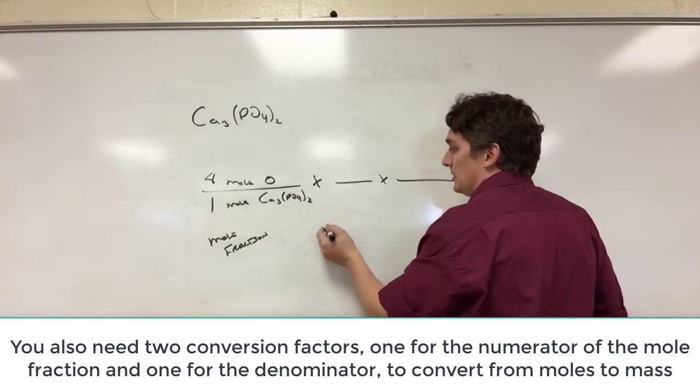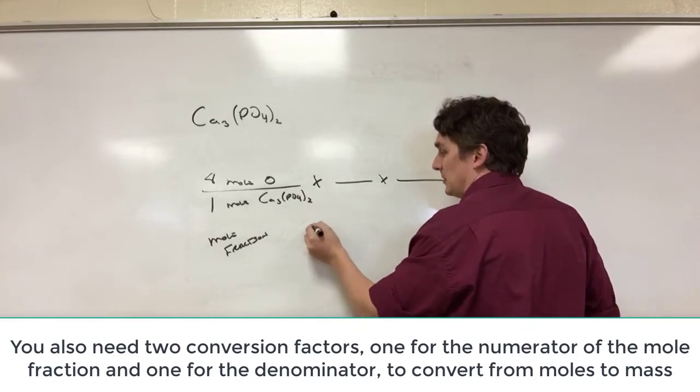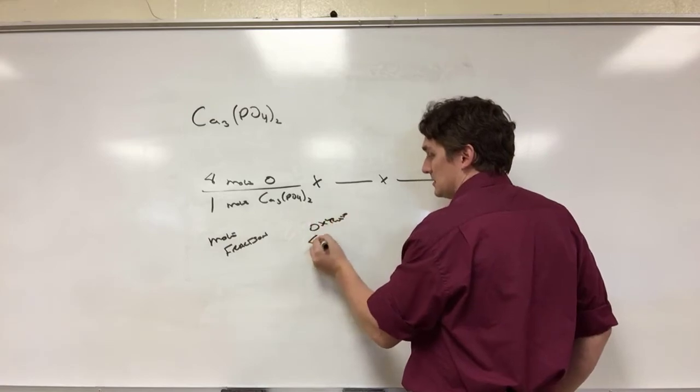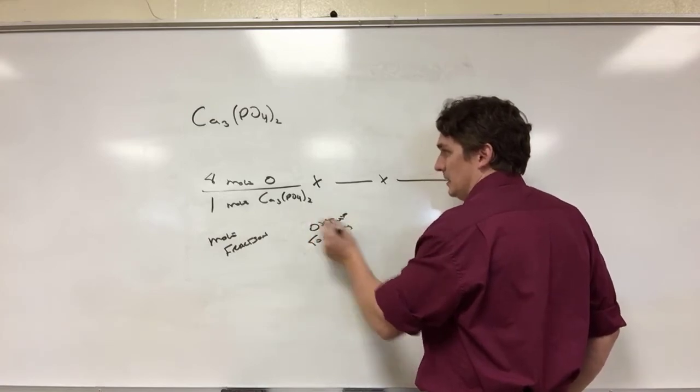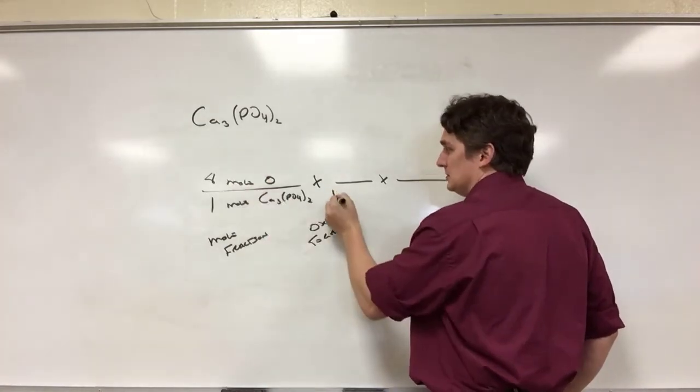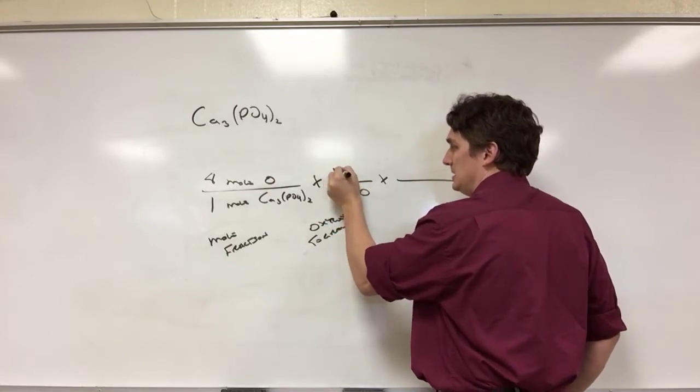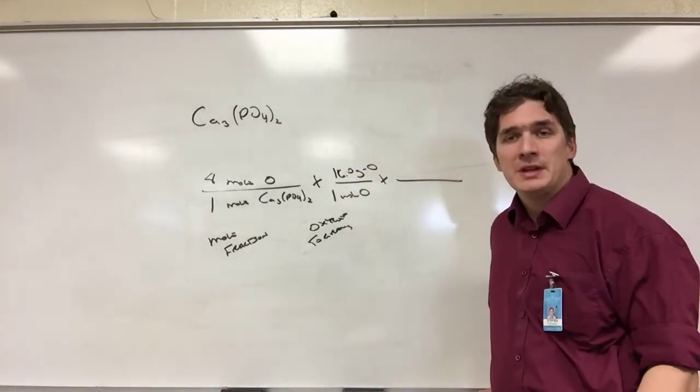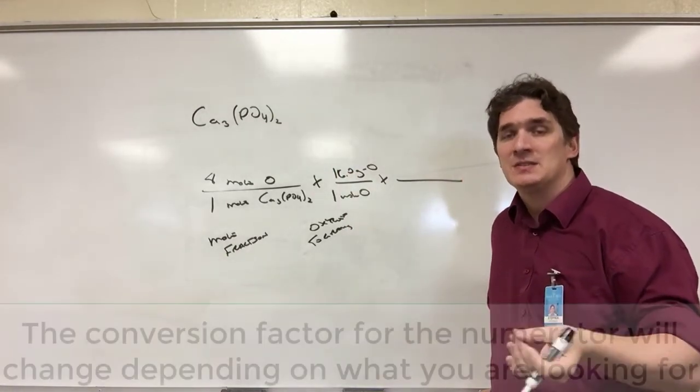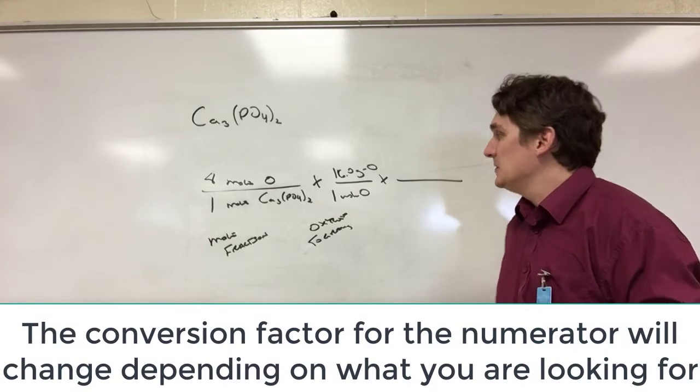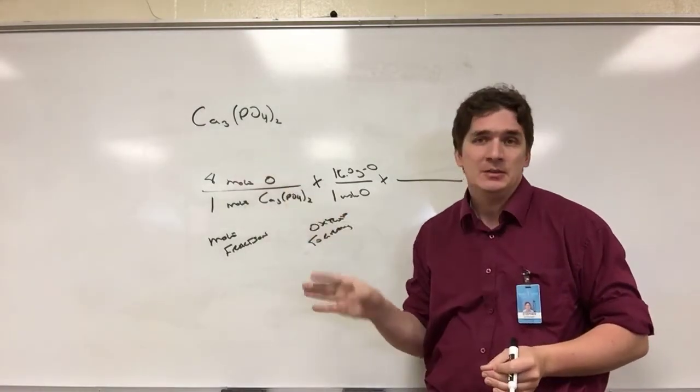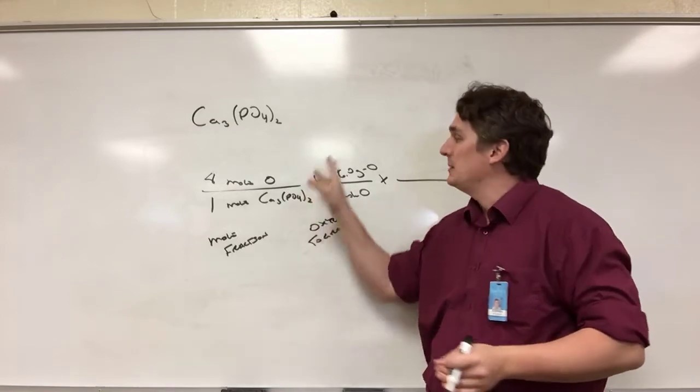So we're going to have one mole, one conversion factor for converting oxygen to grams. So for our mole of oxygen we have 16.0 grams of oxygen. If we were working with calcium we'd put the weight of calcium. If we had phosphate we'd put in the weight of phosphate. This first conversion factor is typically the one that corresponds to what's on top.